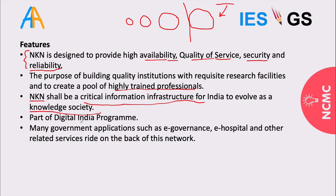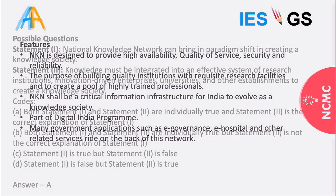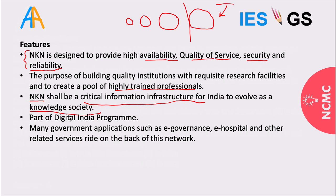Many government applications such as e-governance, e-hospital, and related services run on the back of NKN. E-governance can be supported for all connected institutes, and since medical institutes are connected, e-hospital services can also run on this network. NKN can bring a paradigm shift in creating a knowledge society — knowledge must be integrated into an effective system of research institutions, innovation-driven enterprises, universities, and other establishments.